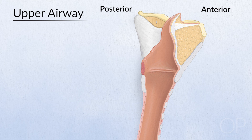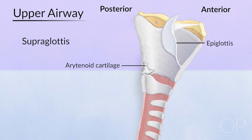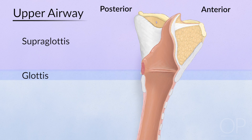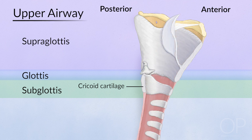The larynx itself is divided into three contiguous areas: the supraglottis, which includes the epiglottis, false vocal folds, and arytenoid cartilages; the glottis, which includes the true vocal folds themselves; and the subglottis, or region immediately below the true vocal folds. The subglottis is the only part of the airway that is made of a complete cartilaginous ring, called the cricoid cartilage. The trachea is made of a series of U or C-shaped cartilages.